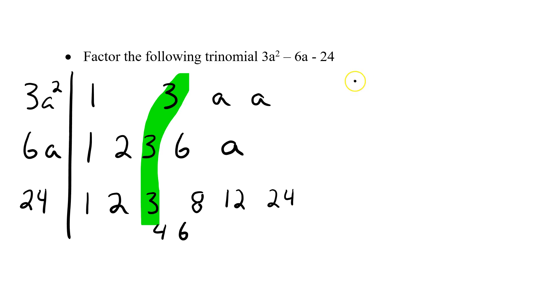So I take my 3 and I divide each term by 3, which leaves me with a². Now this is -6 divided by 3, which gives me -2a, and then -24 divided by 3 gives me -8. So now I've got a trinomial that I can actually factor.